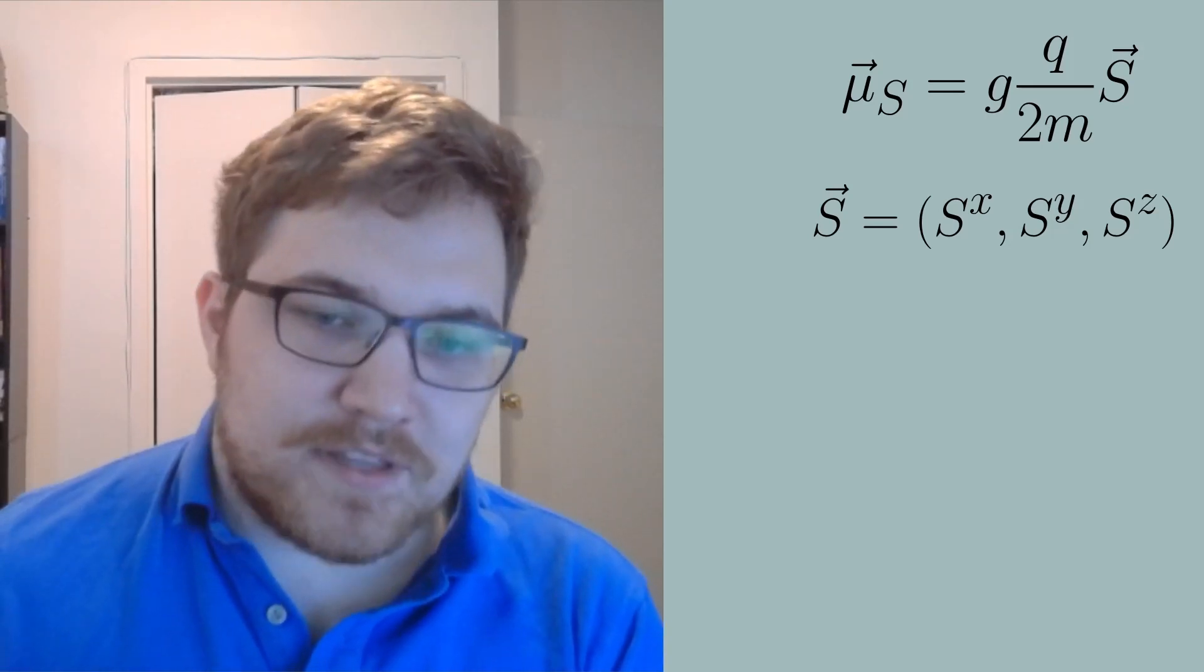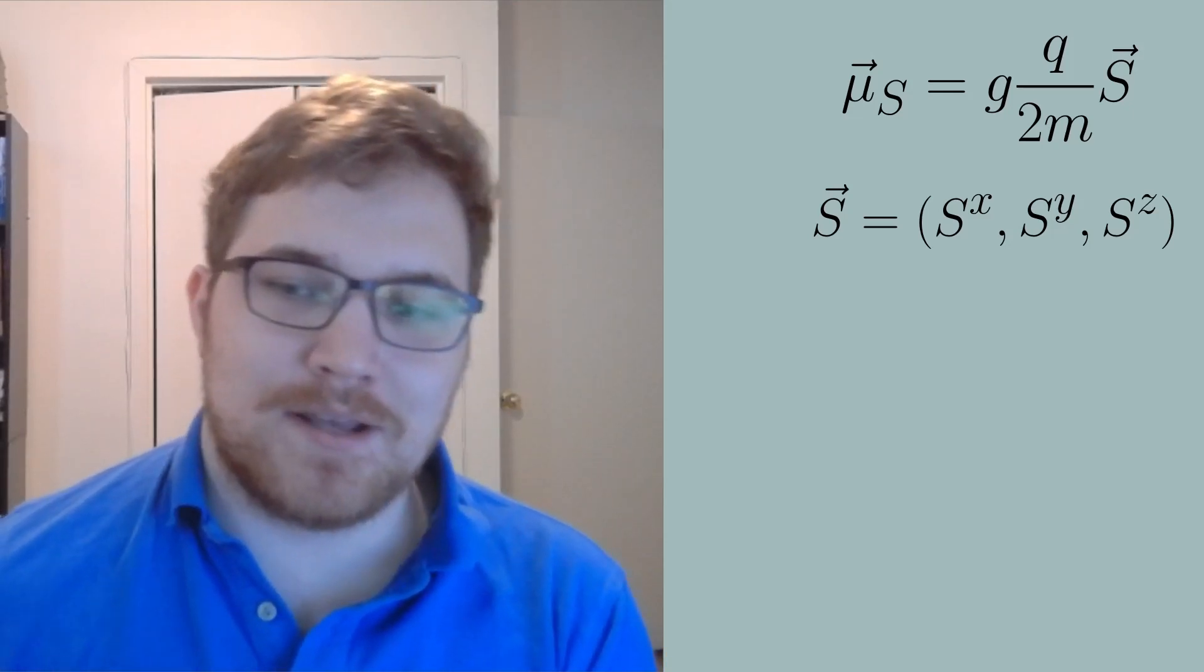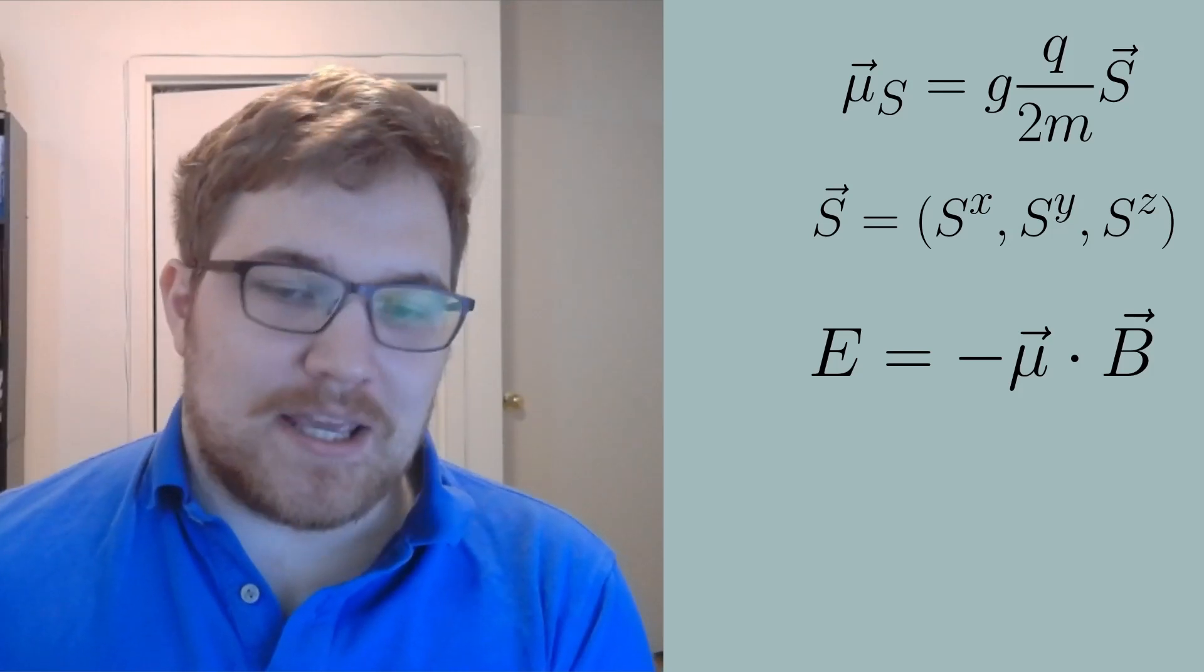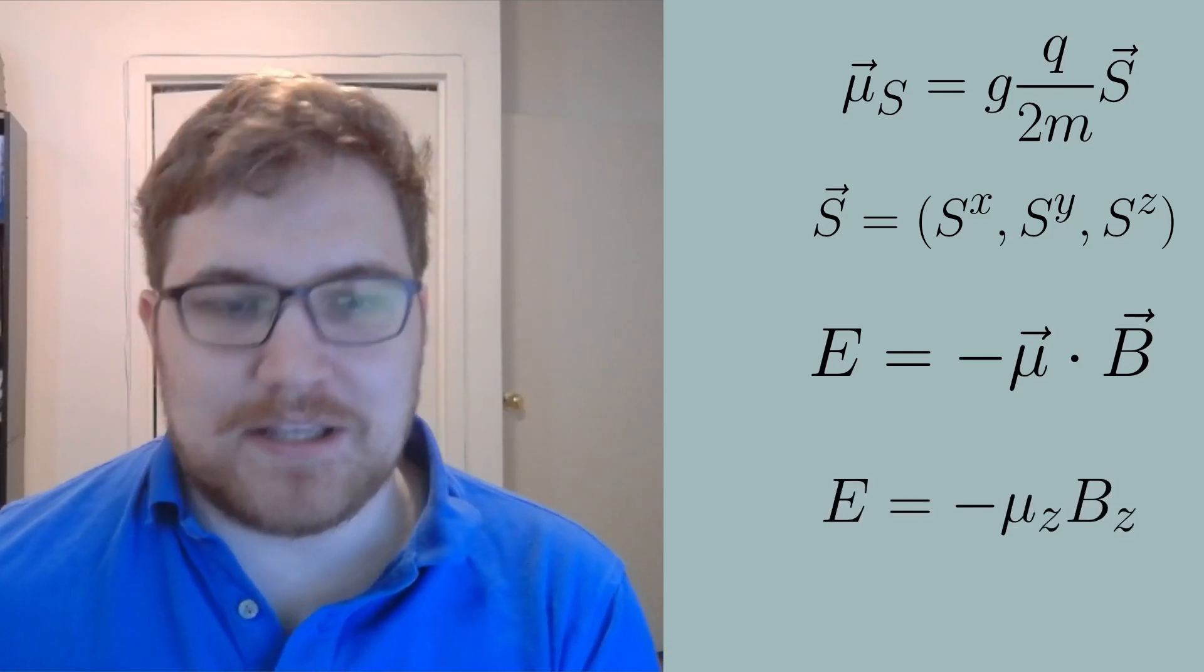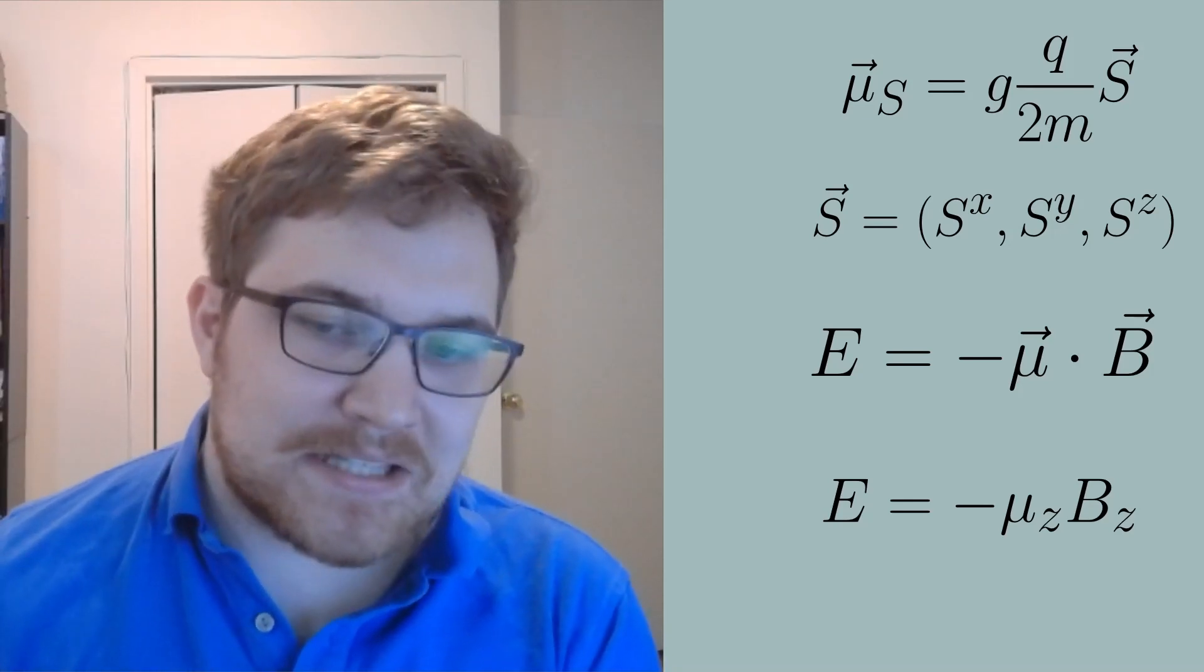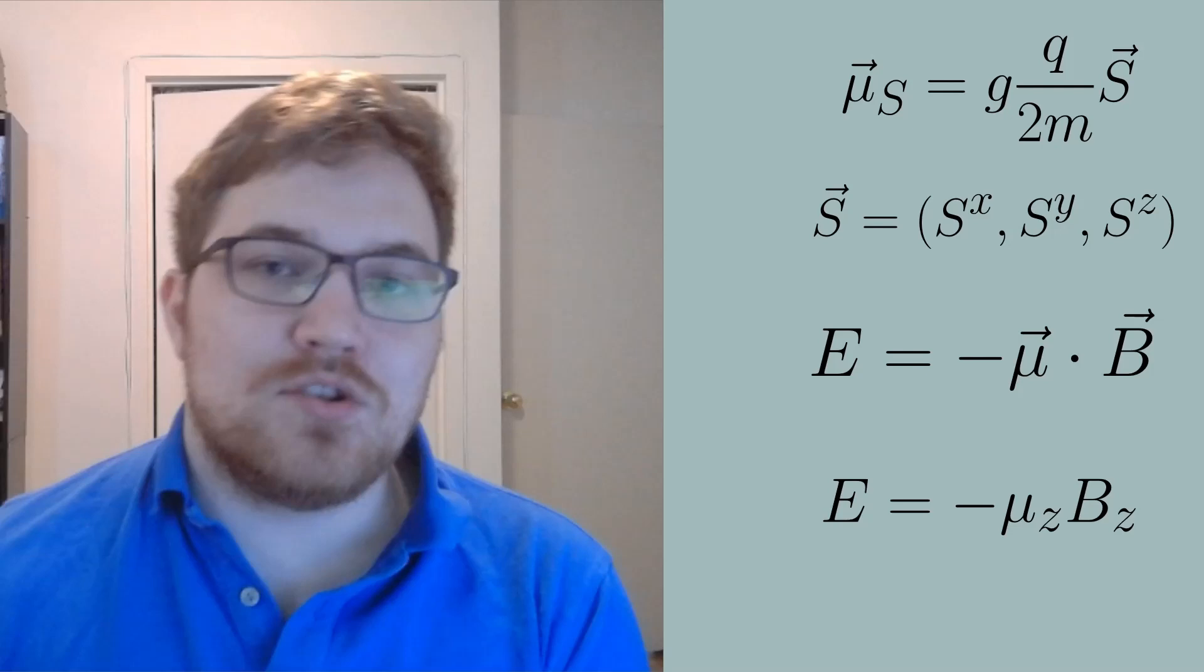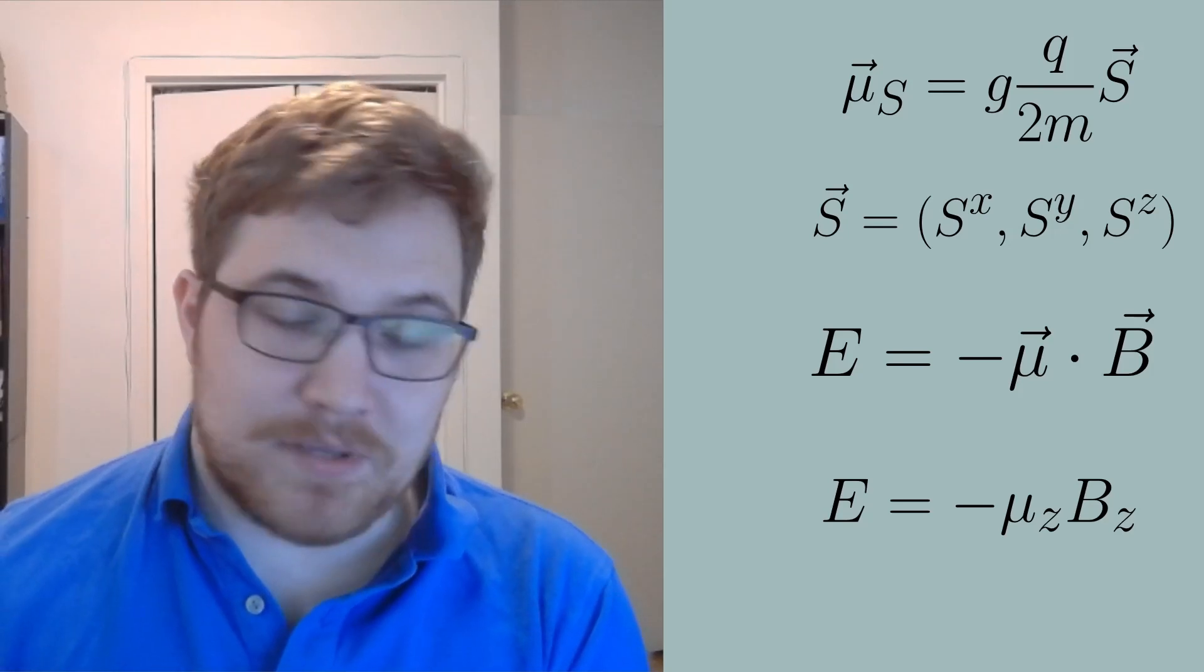The energy of the magnetic moment in a magnetic field is given by the dot product between the magnetic moment and the magnetic field with a negative one out front. Here we can imagine the case, for example, where the magnetic field is pointed in the z direction, giving us the reduced equation given here. When a proton is put into a magnetic field, it tends to align its magnetic moment parallel to that field, thus pointing the spin parallel to that field. This is due to it being energetically favorable to do so. This fact will become important soon.